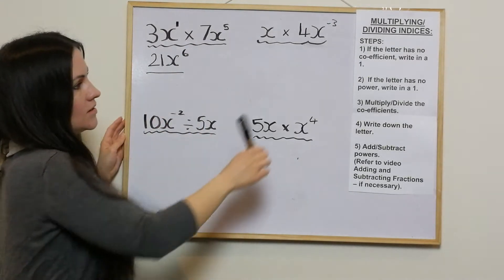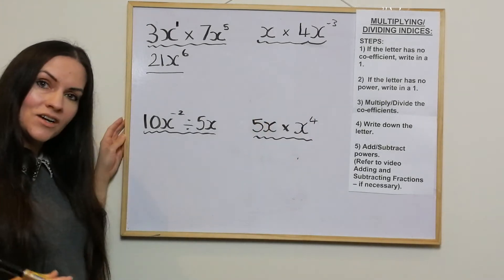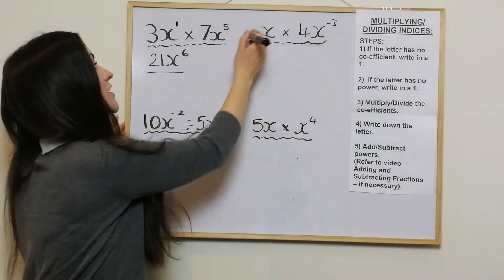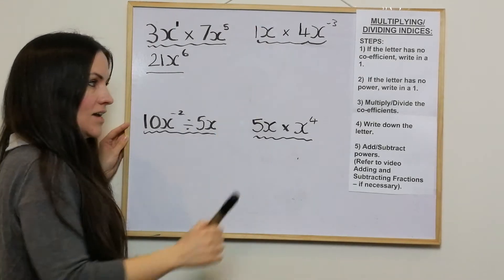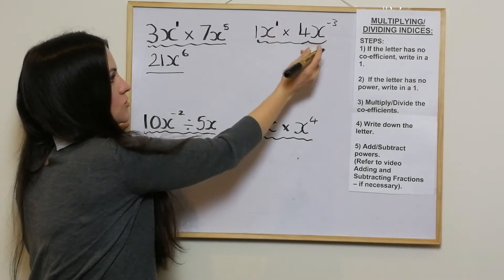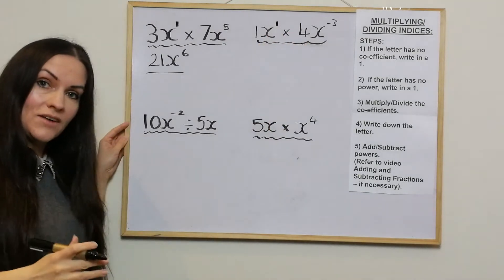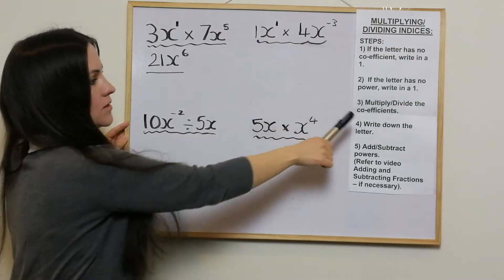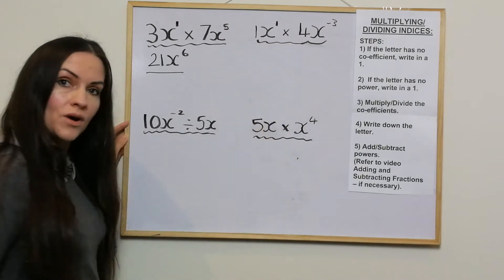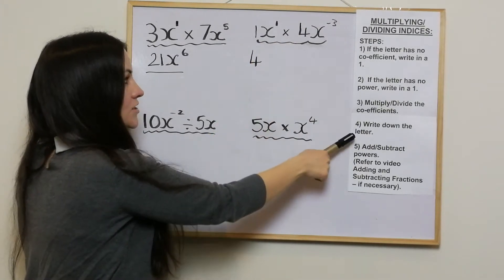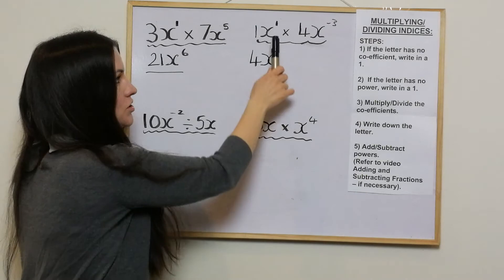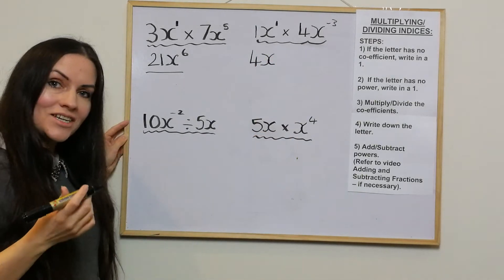I'll try the next one: x times 4x to the negative 3. If the letter has no coefficient, write in a one — there's no coefficient on x, so I write in a one. If the letter has no power, write in a one — so I'll put a one in there. Multiply the coefficients: 1 times 4 is 4. Write down the letter, which is x. And we're adding the powers: 1 add negative 3, which is negative 2.